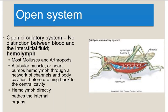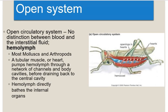The open circulatory system is mostly present in mollusks and arthropods. In the body of mollusks and arthropods, the fluid that moves is called hemolymph. In this system, there is no distinction between blood and interstitial fluid, so the combined fluid is referred to as hemolymph, which directly contacts internal organs because no vessels are present.